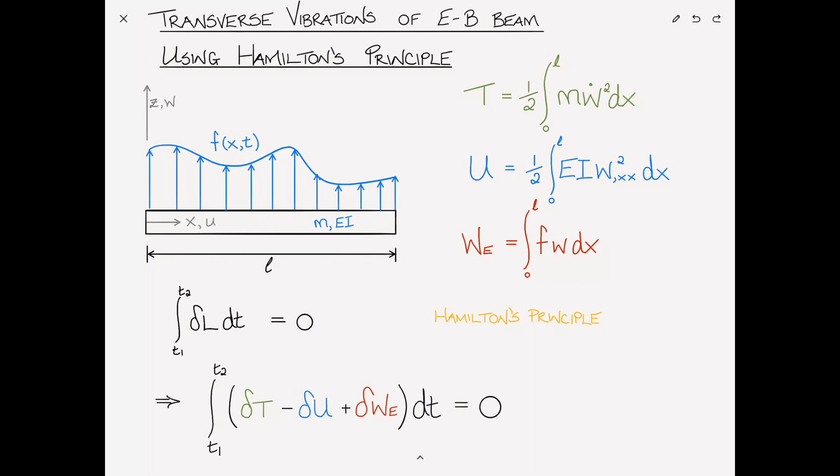Let's give these some numbers: 1, 2, 3, 4, and 5. We need to proceed by taking the variation of the kinetic and potential energy and work expressions.